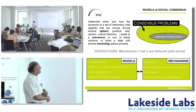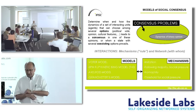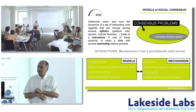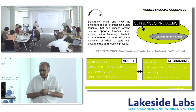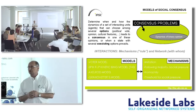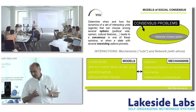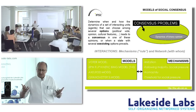What do I mean by a consensus problem? The idea is simple. It determines when and how the dynamics of a set of interacting units — agents — that can choose among several options (political options, opinions, visual features, whatever) lead to a consensus in one of these opinions, or when a state with several co-existing options prevails; when the system self-organizes into a common state or common opinion, or when the dynamics lead to co-existence.